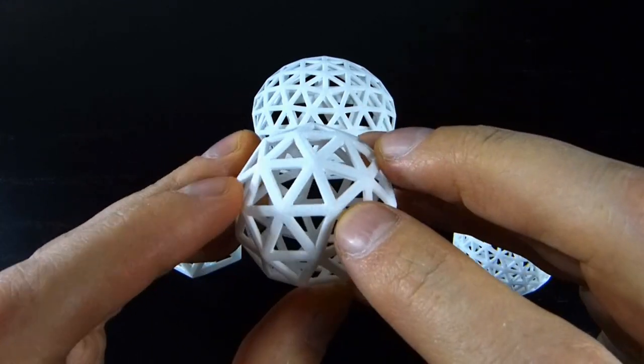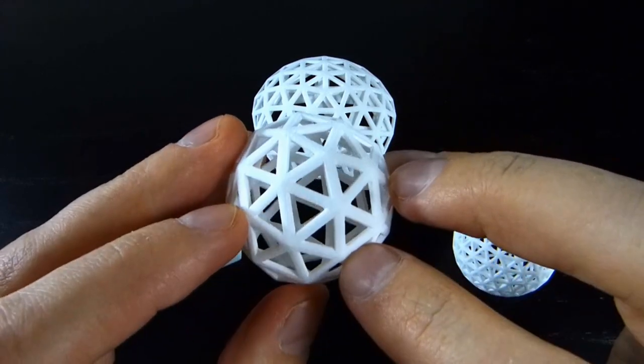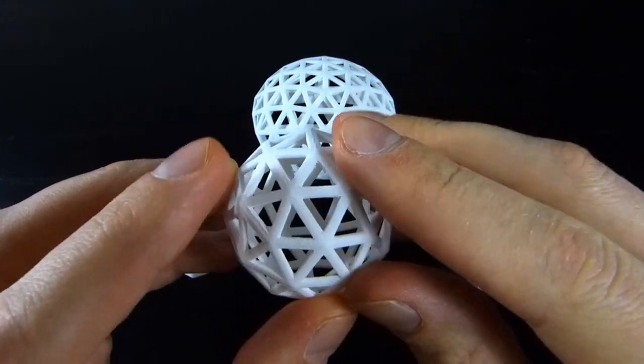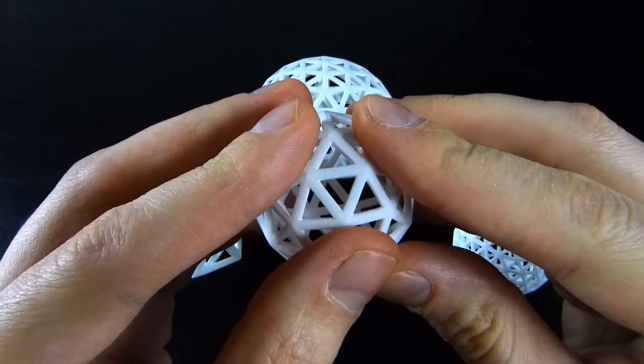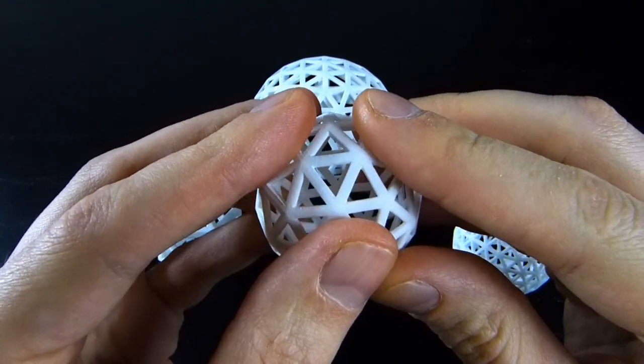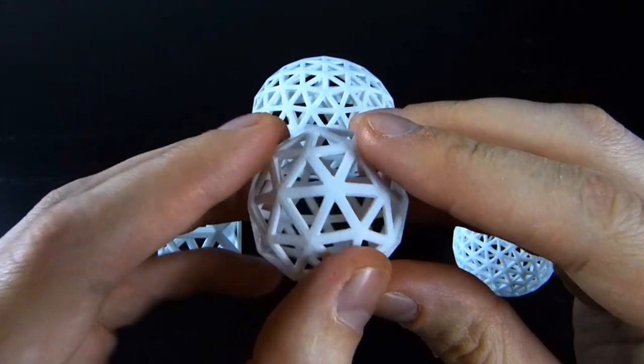So here's a degree 5 vertex, and here's another one, and there's one more. And so there are the four triangles that used to be a single triangle on the icosahedron.